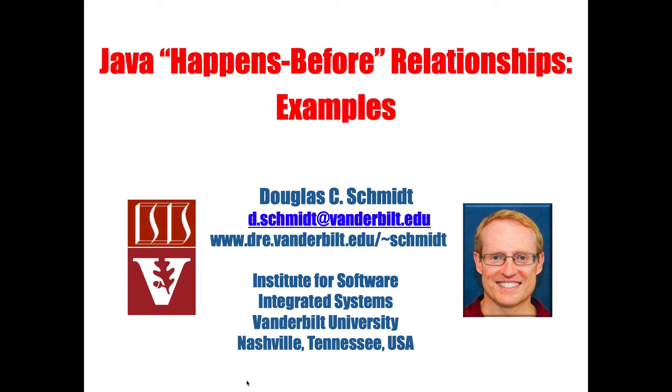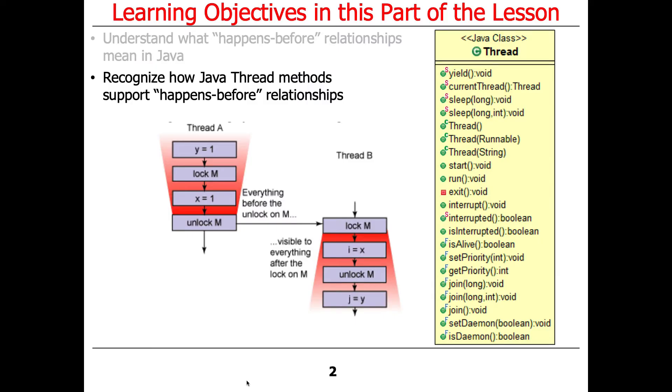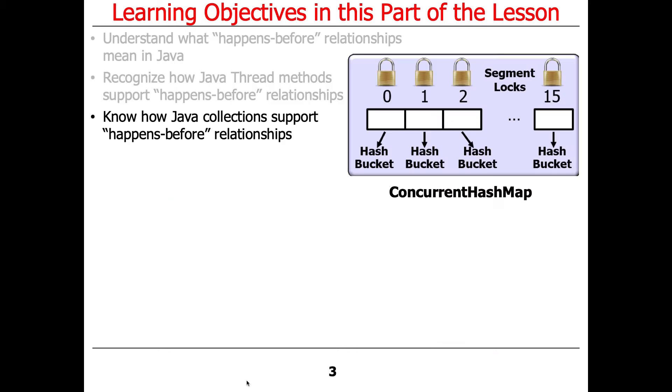Okay, now that we've talked a bit about the concept of happens-before relationships, let's give some examples, and hopefully this will make it clearer by looking at concrete examples of what is actually going on here.